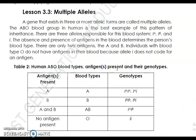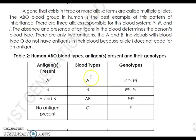The third type of non-Mendelian pattern of inheritance is what we call multiple alleles. This means that a gene that exists in three or more allelic forms is called multiple alleles. A good example of this is the ABO blood type — where, if you observe, there are three alleles.